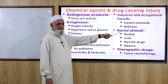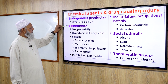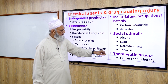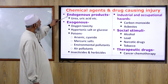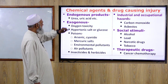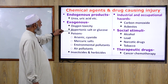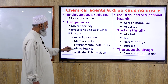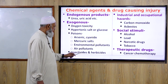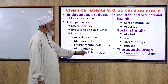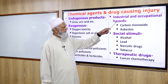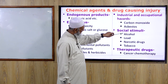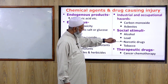Chemical agents and drugs causing cell injury include endogenous products such as urea and uric acid, and exogenous products including oxygen toxicity, hypertonic salt or glucose solutions, poisons like arsenic, cyanide, and mercuric salts, environmental pollutants, air pollutants, insecticides and herbicides, industrial hazards like carbon monoxide and asbestos, and social stimuli such as alcohol, narcotic drugs, and tobacco.